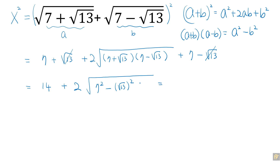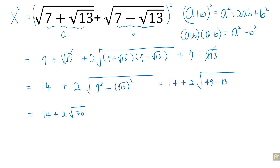So this expression becomes 14 plus 2 times √36. √36 equals 6, so this becomes 14 plus 2 times 6, which is 14 plus 12, giving us 28.